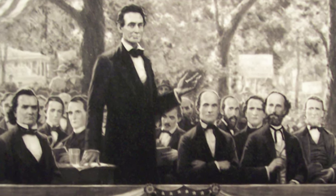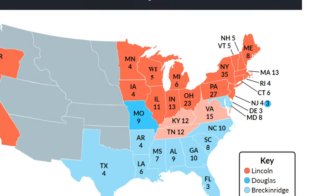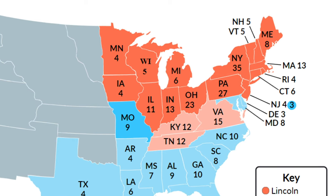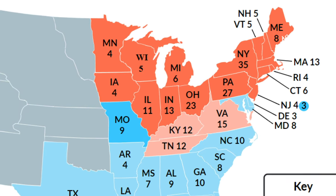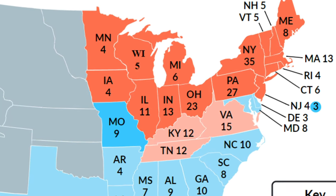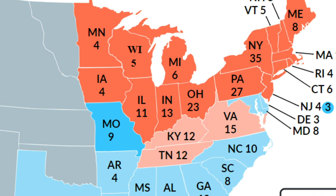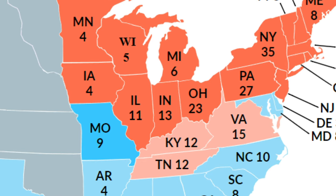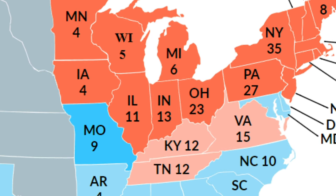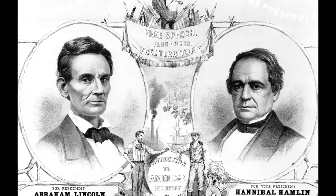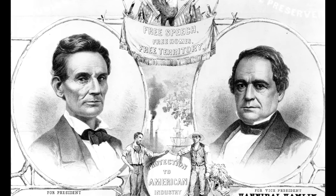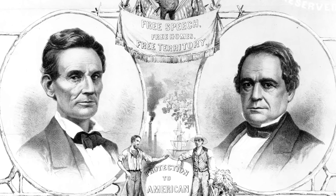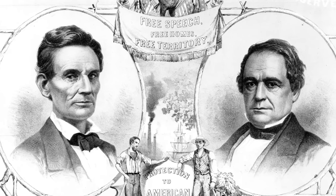And that is exactly what happened. Abe Lincoln, despite winning less than 40 percent of the popular vote, won the election in a landslide. He didn't carry a single Southern state, but the Southern vote was split between Breckinridge and Bell. In the North, Lincoln dominated, with Douglas winning only the state of Missouri. The election of an anti-slavery Republican president was the straw that broke the camel's back for many of the Southern states, who immediately considered secession.